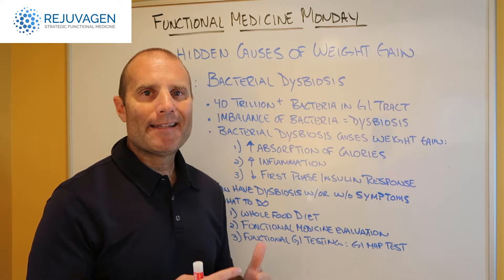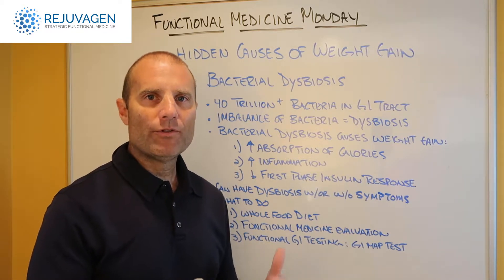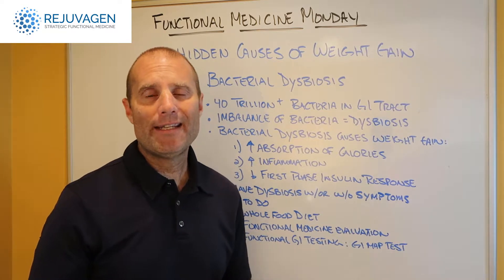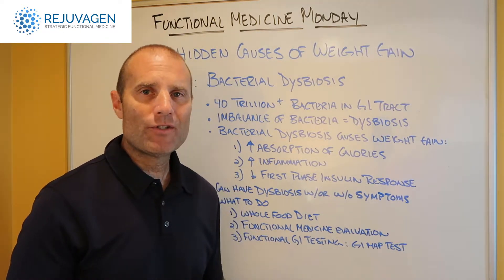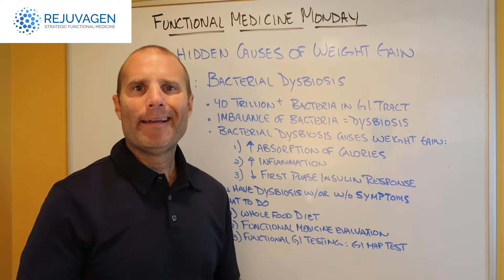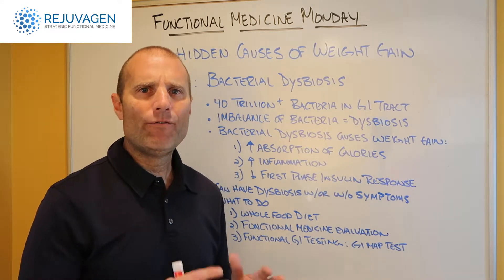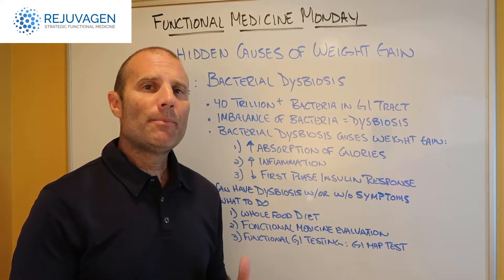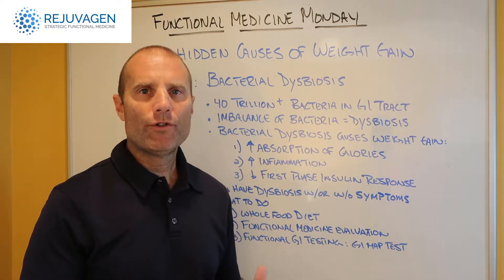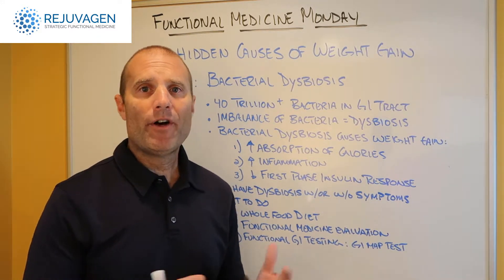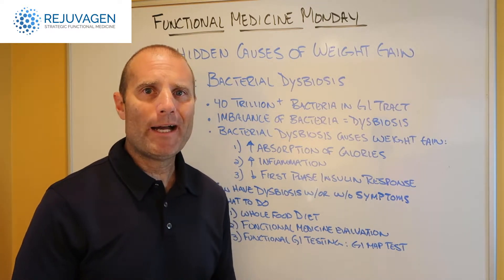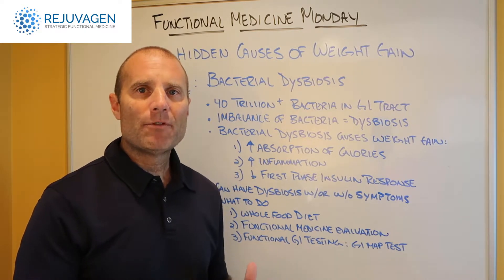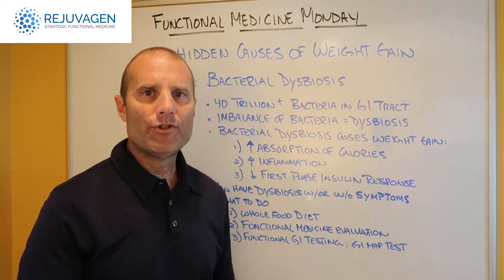So these are three ways that bacterial dysbiosis can lead to weight gain. Now, what's important to understand is you can have bacterial dysbiosis with symptoms like gas, bloating, constipation, diarrhea, and food intolerances. Or you can have bacterial dysbiosis and no overt GI symptoms — you may have other symptoms outside the GI tract like headaches, migraines, or back pain, but not necessarily symptoms you would associate with having a problem in your GI tract.